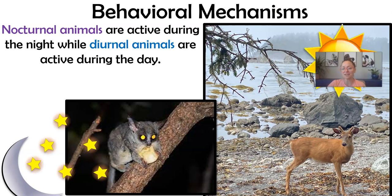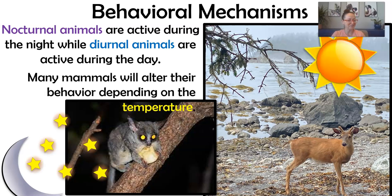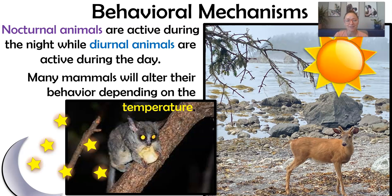Animals can be described as nocturnal or diurnal. Diurnal animals, like humans, are generally awake during the daytime and sleep at night. Mammals will also alter their behavior depending on temperature — if it's a really hot day, you won't see many mammals hanging out in direct sunlight. They may rest in the shade during the middle of the day and become more active at dusk or sunrise.